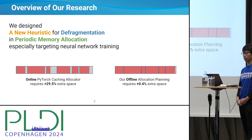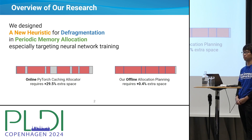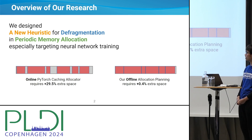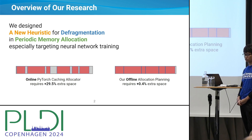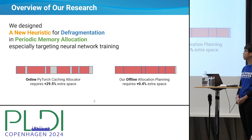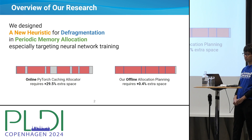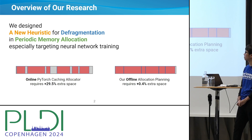In today's training of neural networks, it consumes a lot of memory, as talked about in today's keynote. There are a lot of memory optimizations, and when memory allocation is highly optimized, the PyTorch Caching Allocator — which is used as the default memory allocator in PyTorch — consumes an extra 29.5% on average space due to fragmentation. To cope with this problem, we designed a new heuristic for defragmentation in periodic memory allocation, especially targeting neural network training.